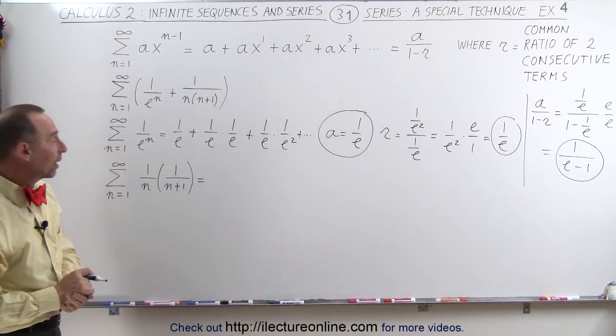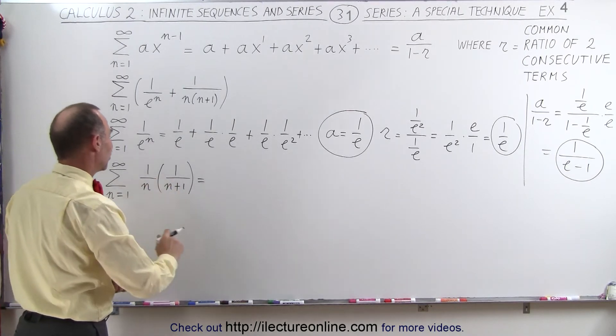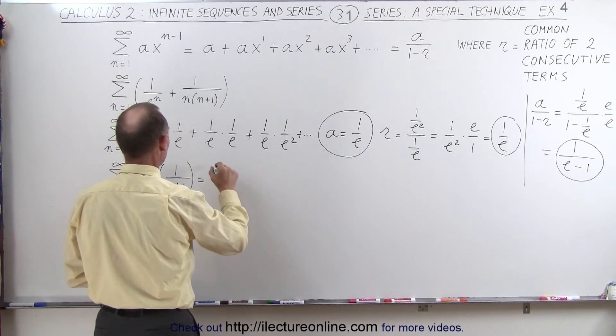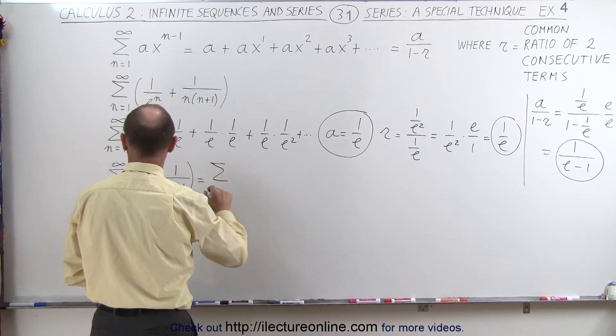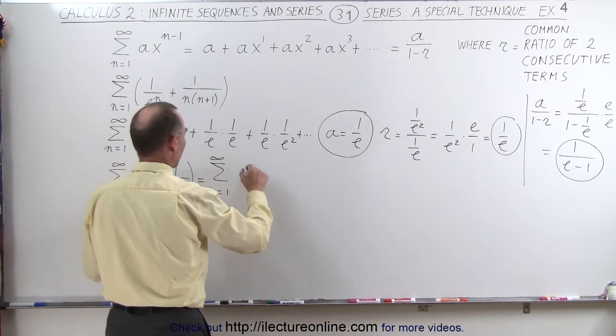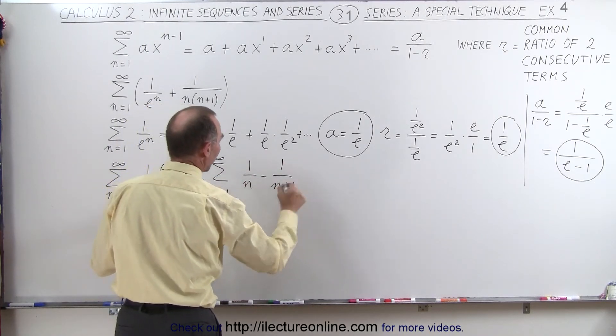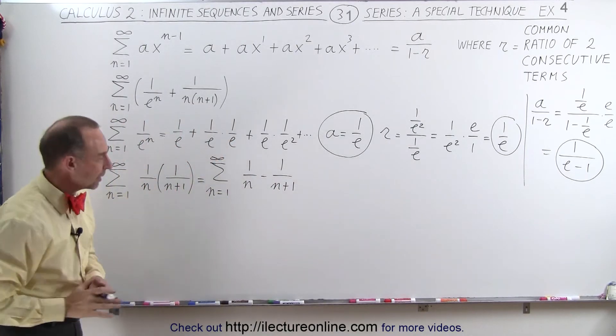All right, now let's go ahead and find the sum here. Using partial fractions, we can say that this can be written as the sum from n equals 1 to infinity of 1 over n minus 1 over n plus 1. Well, how can that be done?